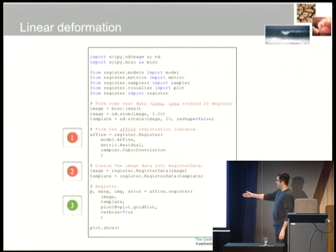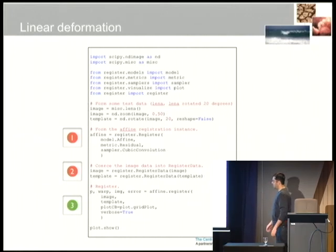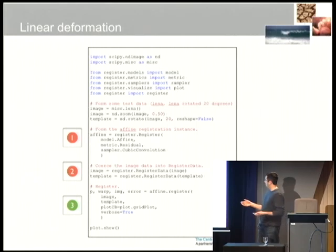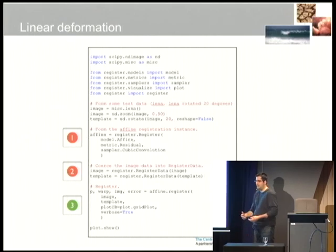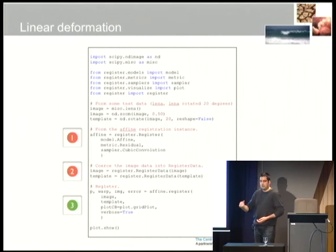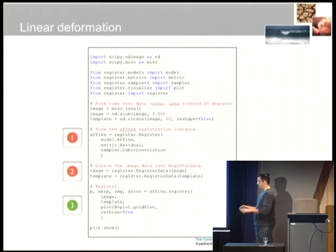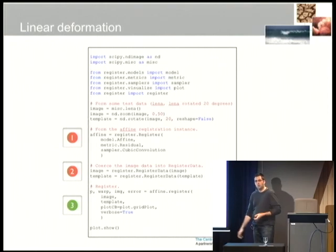The final step is calling the top-level register method and running it. There are a few methods — you can print out a verbose description of what's happening at every iteration, or print out a graphic using a plot callback.